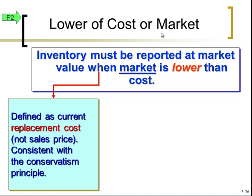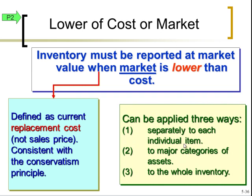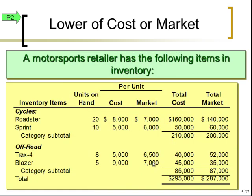For example, if we bought a bunch of a certain computer model and sales were lower than expected, those old models sit on the balance sheet at cost. If we go back to the manufacturer and find we can now buy that same model for a really low price because it's obsolete, we'd want to adjust our balance sheet down to the current replacement cost. This adjustment can be made separately for every single item, by categories of assets, or as one big adjustment to the whole inventory.